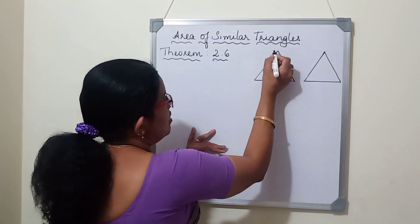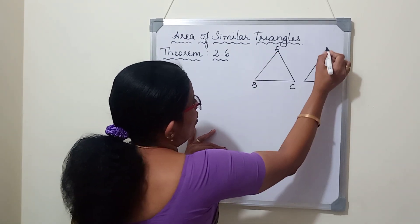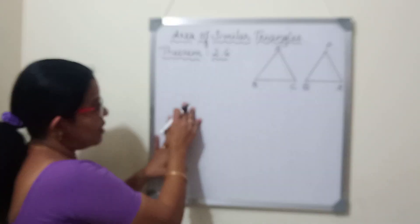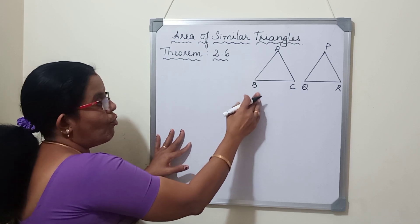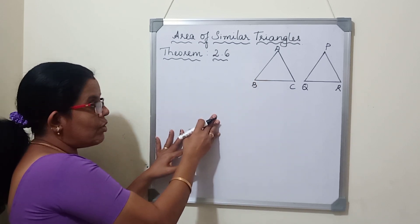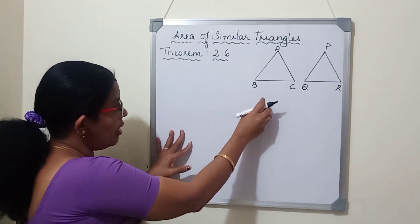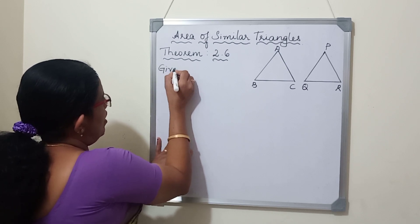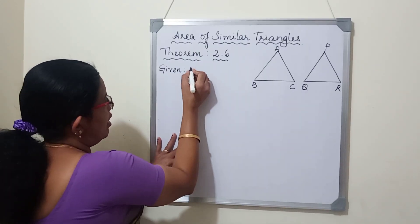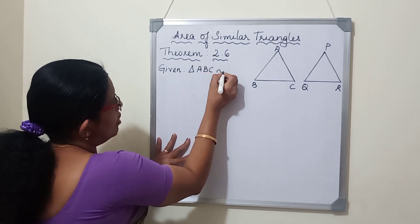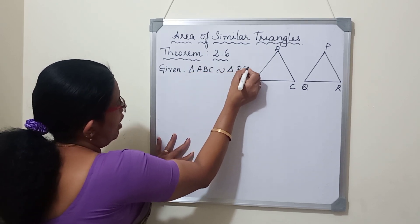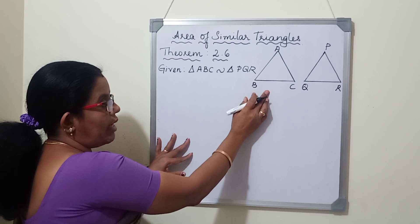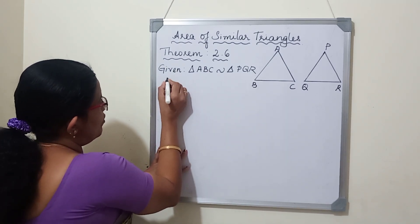There are two triangles ABC and PQR in this theorem. The theorem states that the ratio of the areas of two similar triangles are equal to the square of the ratio of their corresponding sides. So here we will write given: triangle ABC is similar to triangle PQR. Once the triangles are similar, we know that their corresponding angles are equal and sides are proportional.